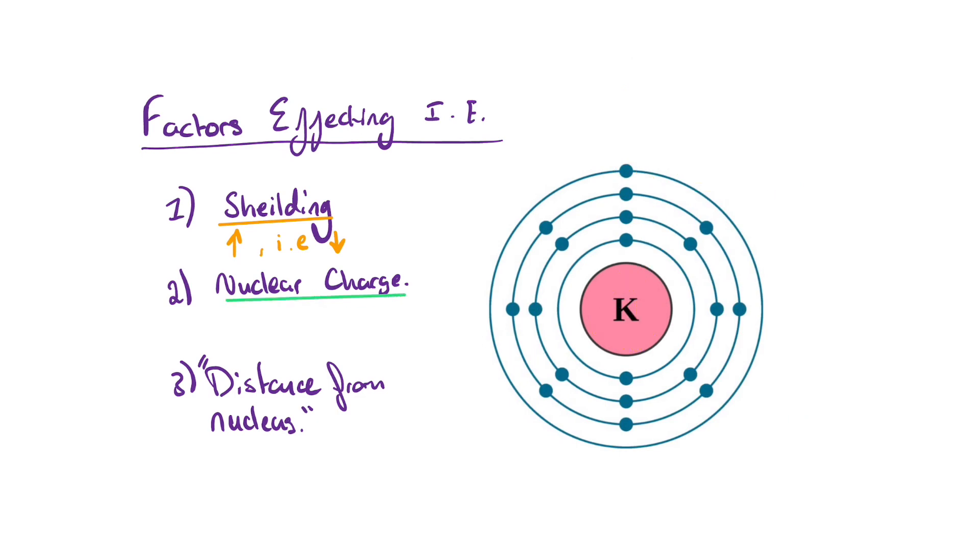Nuclear charge, that's the second factor that affects ionization energy and it is simply how many protons are there in the middle. The more, the stronger the attraction between this and this and therefore the higher ionization energy. As nuclear charge goes up, ionization energy goes up with it.